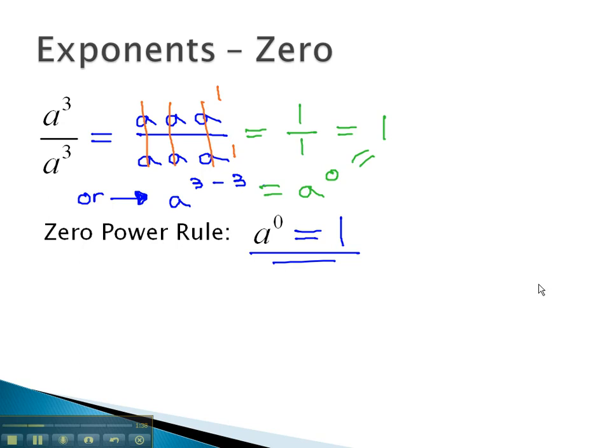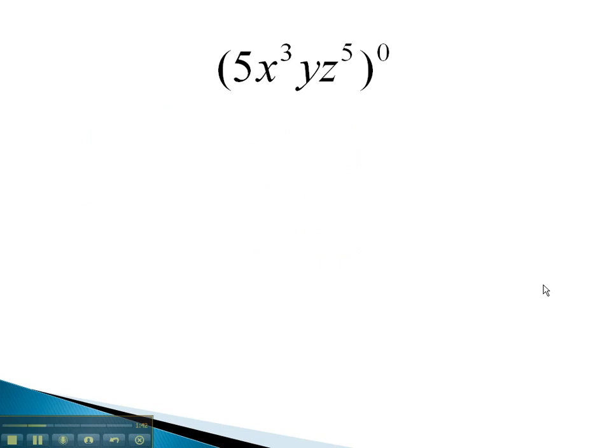Let's take a look at an expression where we can see this work out. Here, we have 5x cubed y z to the 5th, all to the 0 power. Because everything is to the 0 power, that means everything is going to divide out, leaving us with a solution of 1.